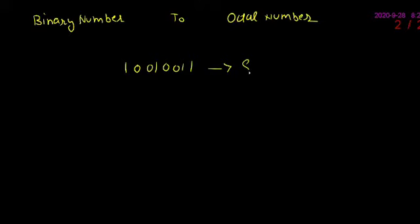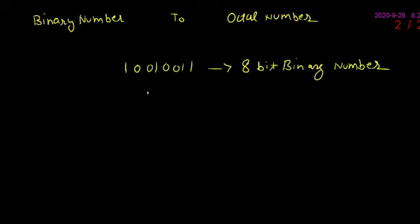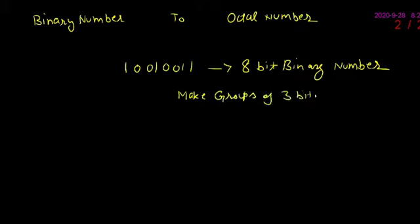Detailed procedure को समझने के लिए हम एक 8-bit binary number लेंगे. इस case में वह binary number है 10010011. Step 1 में आपने binary number के 3-3 bits के groups बनाने हैं, और इसमें grouping start करनी है right to left.